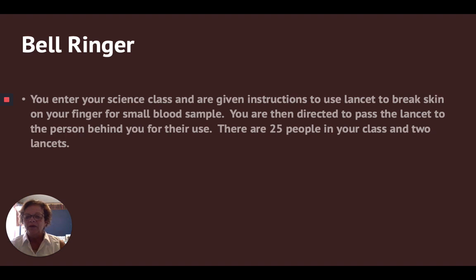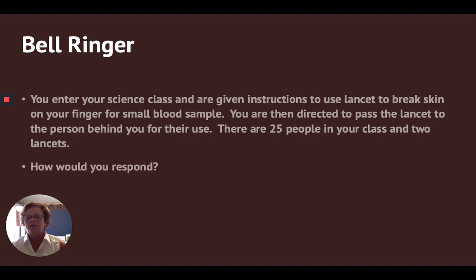The bell ringer that I start with — sometimes I do this before we get started with the unit, sometimes after we've been doing the unit for a while. Obviously when we've been doing the unit for a while, I've gotten some pretty lengthy responses. The bell ringer is: you enter your science classroom and are given instructions to use a lancet to break skin on your finger for a small blood sample. You are then directed to pass the lancet to the person behind you for their use. There are about 25 people in your classroom and two lancets. The question for the students is: how would you respond?